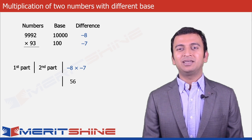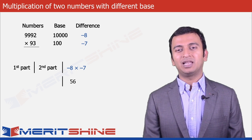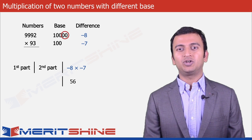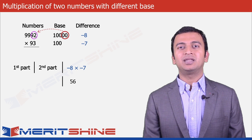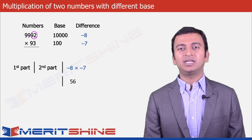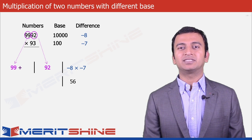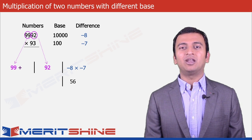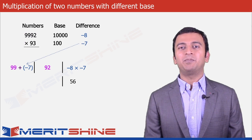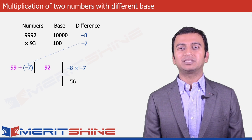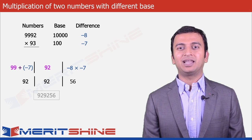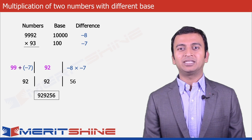To obtain the second part, we will take as many digits from the larger number as is the difference in the number of zeros in our bases, which in our case is 4 minus 2 = 2. So we split 9992 into 99 and 92. The second part gets 92, and the first part has 99 along with the difference from the second number which is minus 7, making it 99 minus 7 = 92. We can now club these three parts and get our final answer, which would be 929256.